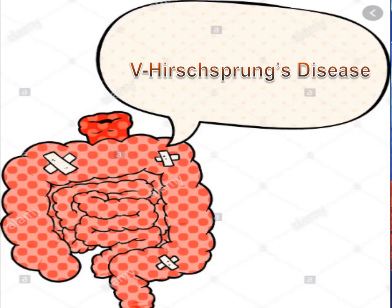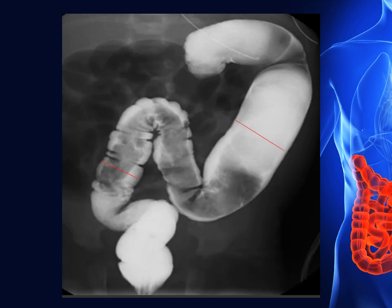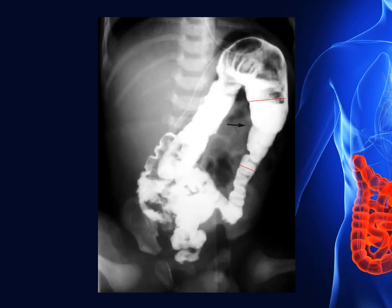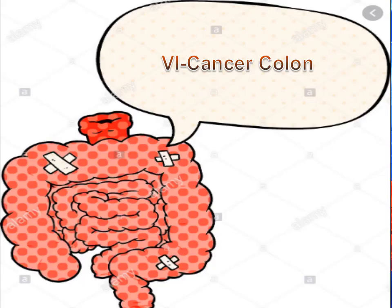Hirschsprung's disease is the most common cause of neonatal colonic obstruction. It is commonly characterized by a short segment of colonic aganglionosis affecting neonates. The affected segment is of small caliber with proximal dilatation. Fasciculation or sawtooth irregularity of the affected segment is frequently seen, and a transition zone is visible. You can recognize the difference in caliber between the normal and affected segments.